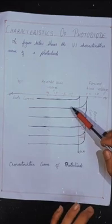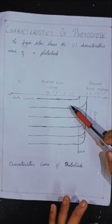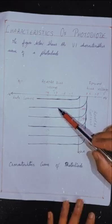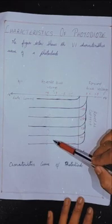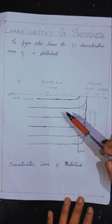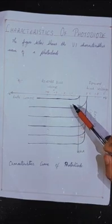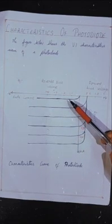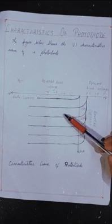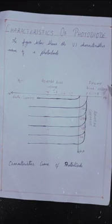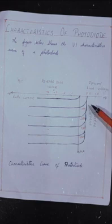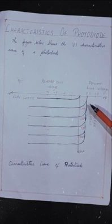We can clearly say here that after illumination, the curves show equal spacing between them. This is because the intensity of incident radiation that falls at the junction is directly proportional to the current that flows through the device. Or we can say the current increases with increase in intensity of light. This is all about the characteristics of photodiode.